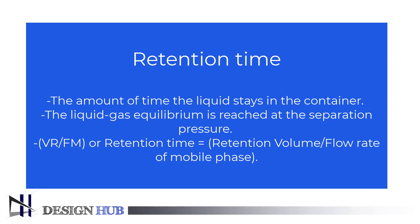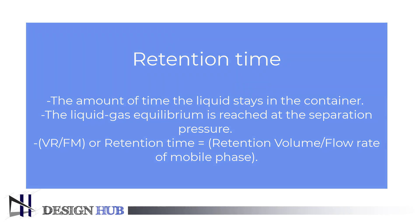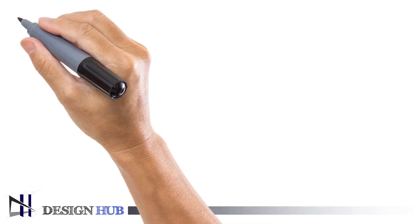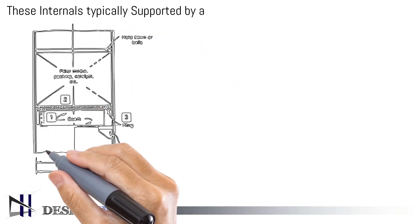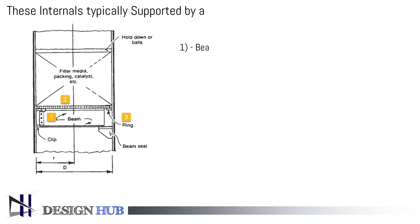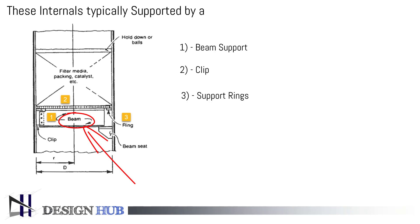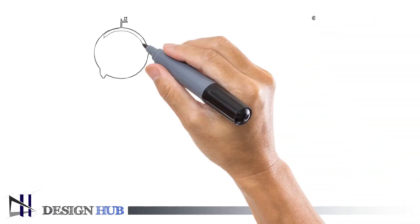Now, we will see how these internals are supported in the vessel. Internals of a pressure vessel are supported with the help of various supports like beam support, clip, and the support ring. As you can see in the figure, there is beam support holding the tray in place, and the beam is supported by the clips. Also, there is a support ring holding the tray in place.